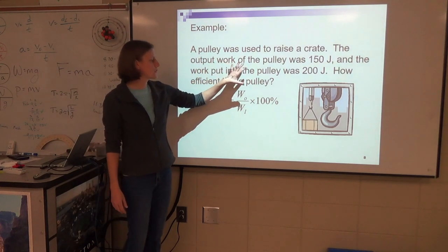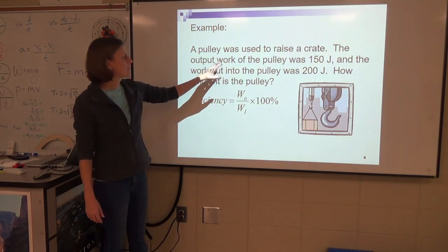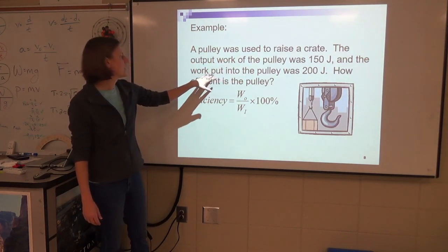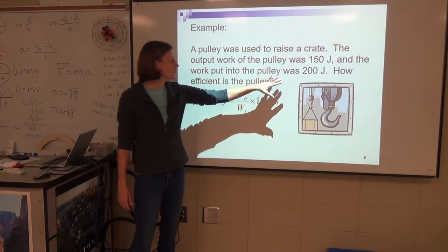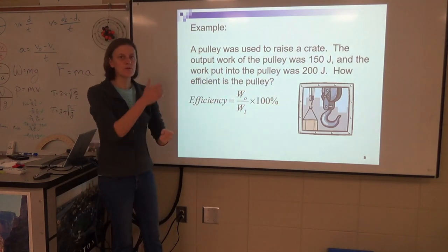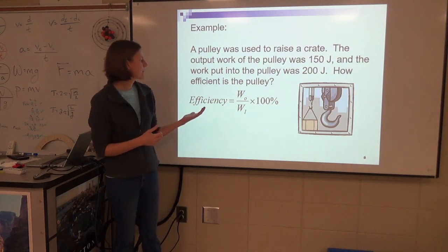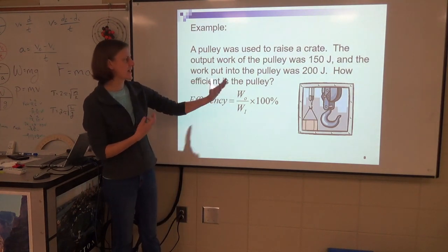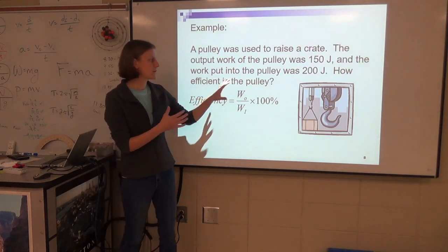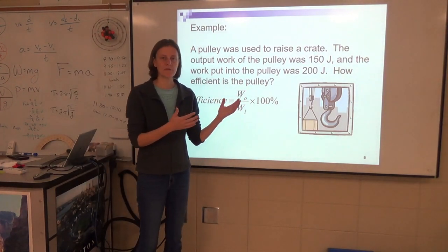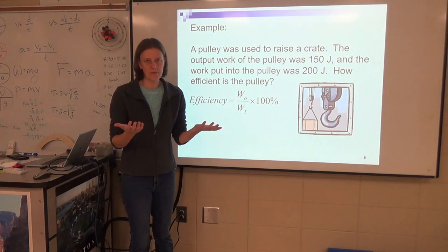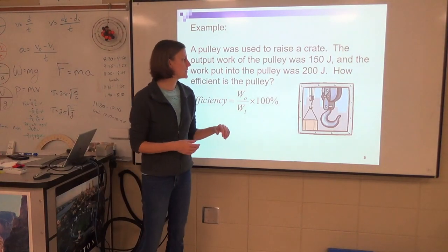Here's a problem with a pulley. The pulley is used to raise a crate. The output work of the pulley is 150 joules and the work put in is 200 joules. So maybe I'm using 200 joules of work to raise something with this pulley, but it's not exactly putting out 200 joules. For a lot of our pulley problems, we'll assume that input equals output, but not in reality.